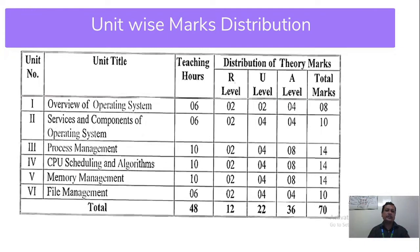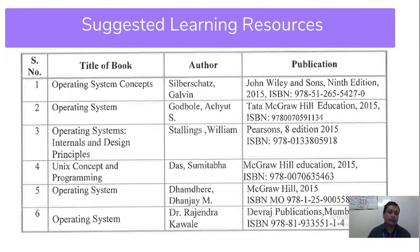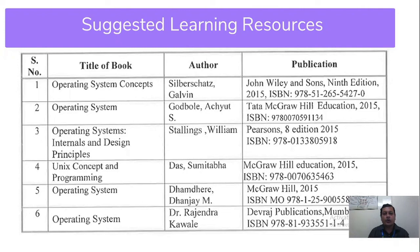This is the distribution of 70 marks divided across six units. For reference books, we can use: Operating System Concepts by Galvin, Operating System by Gorgolik, Operating System Internals and Design Principles by William, Unix Concepts and Programming by Das, Operating System by Dambharay, or Operating System by Dr. Rajen Rasa. These are the books recommended for the Operating System subject. Thank you very much.